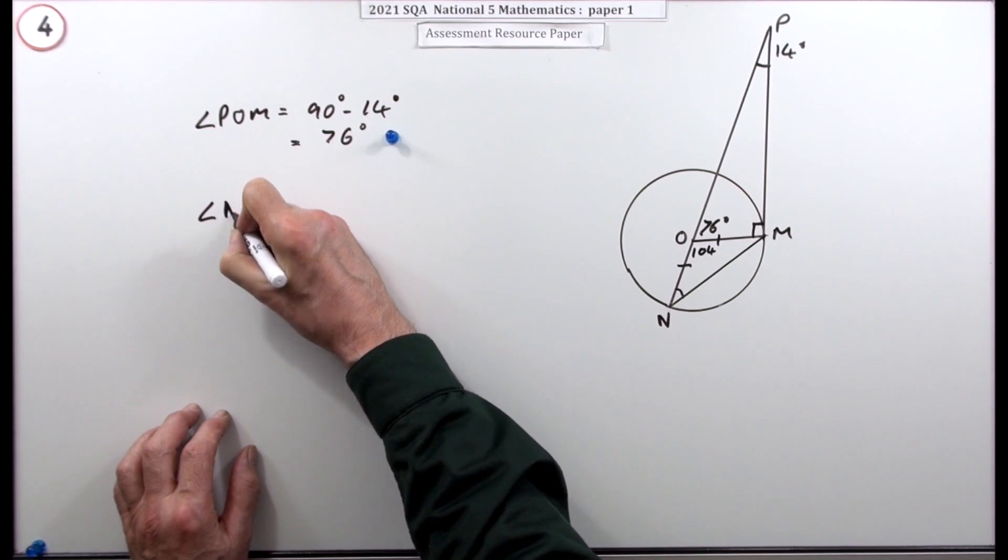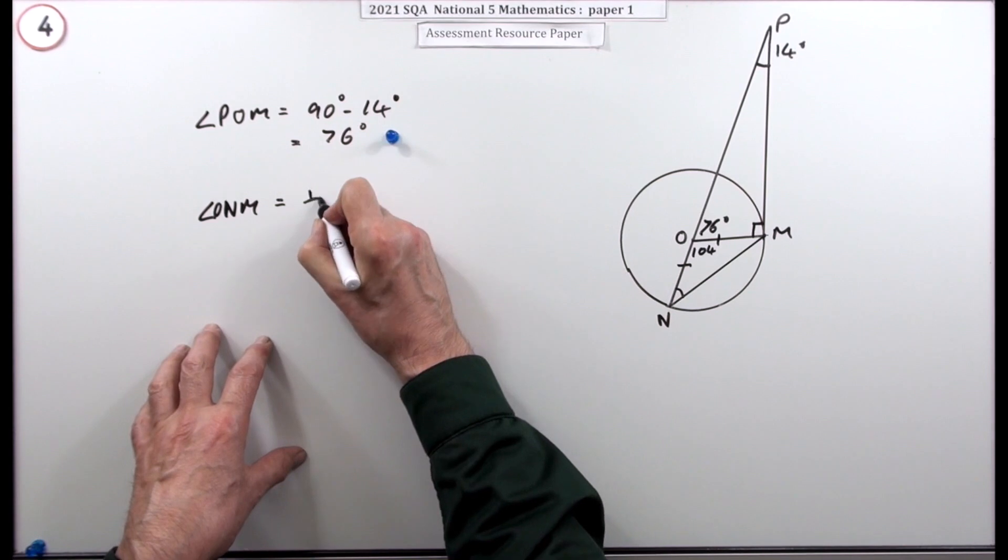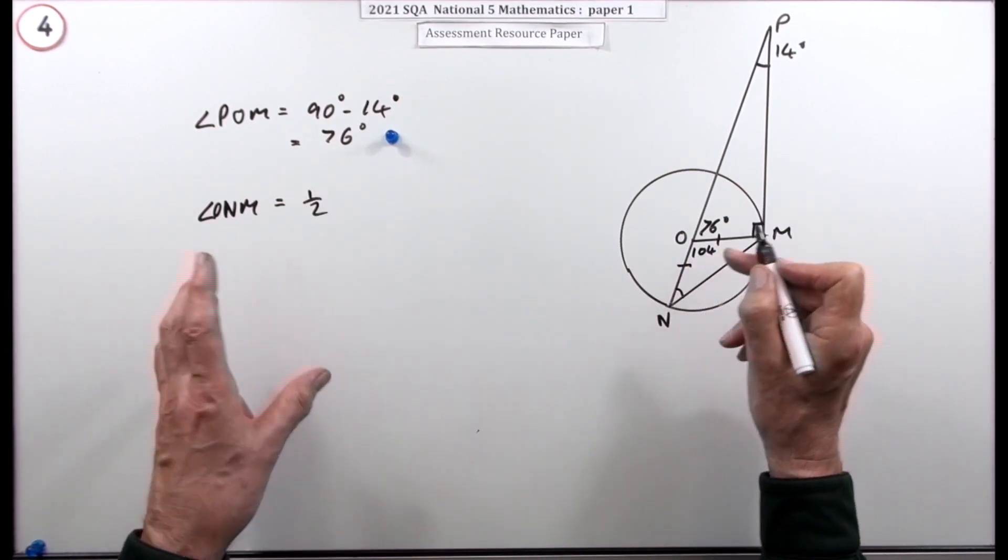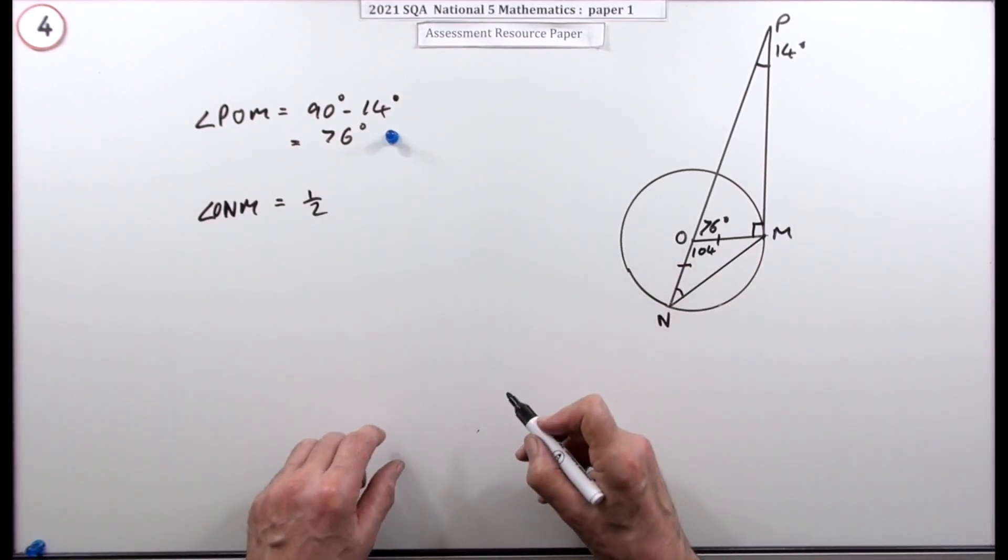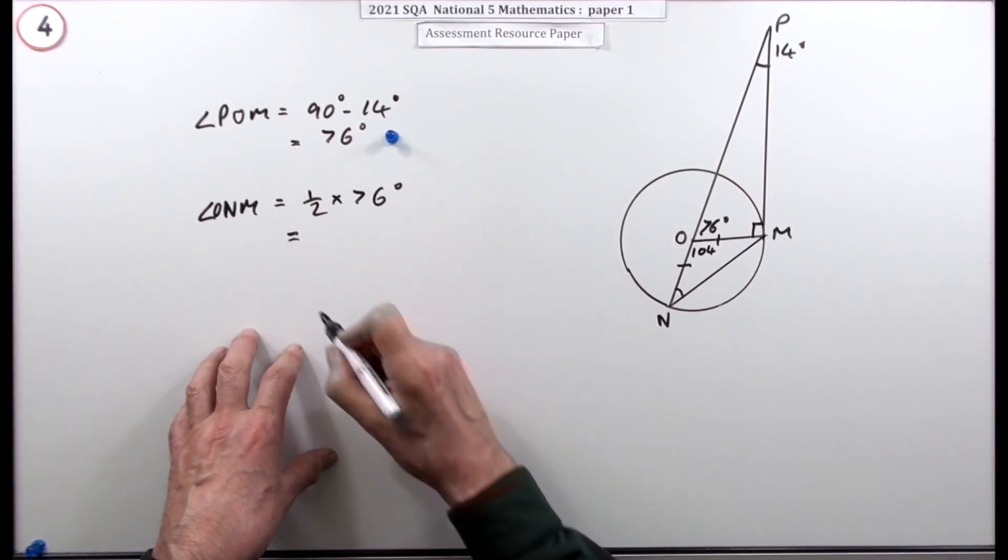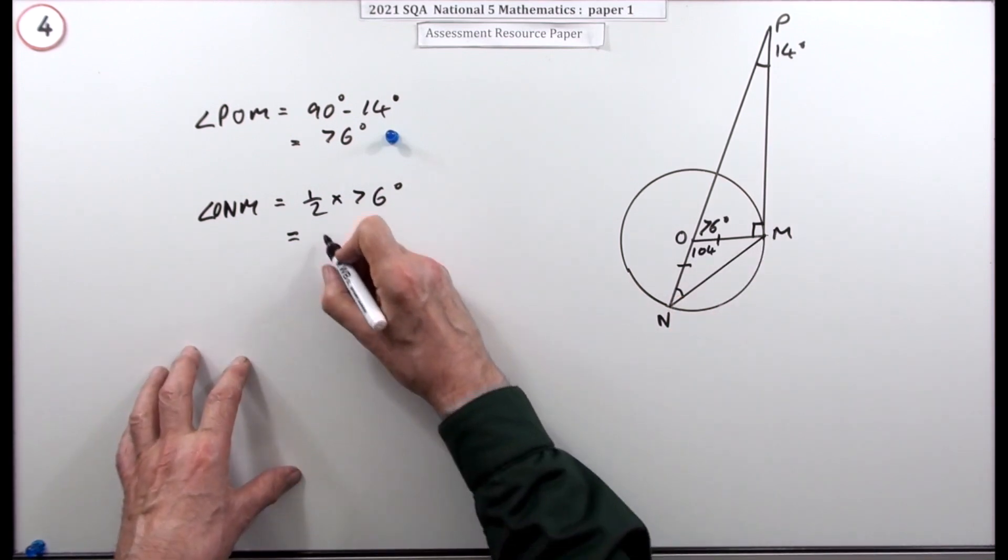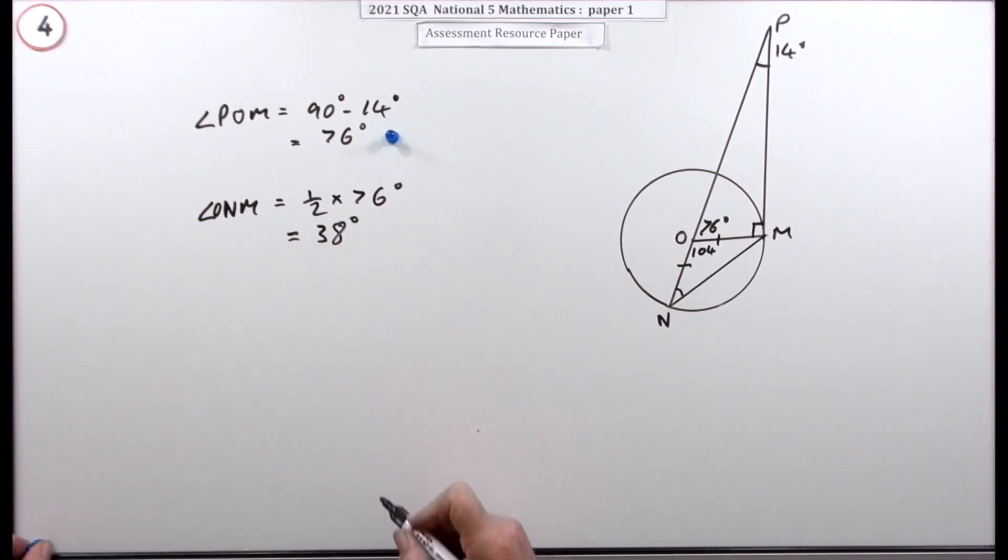So angle ONM is effectively going to be half of the sum of these two, which you know to be 76. So I'll just put a half of 76, which makes that 38 degrees.